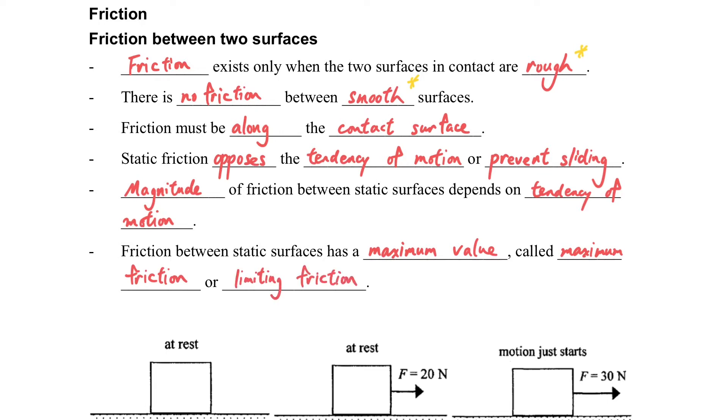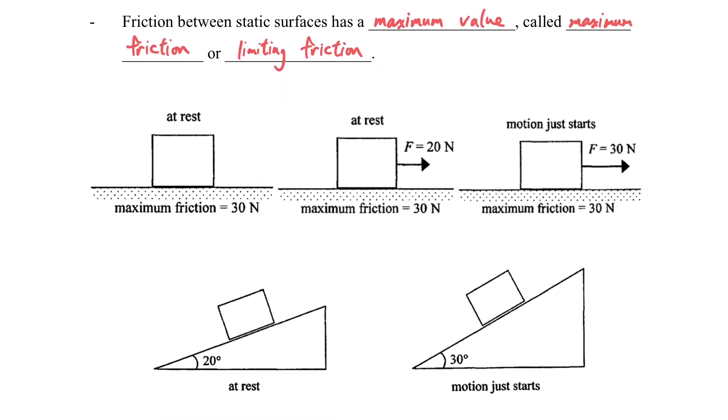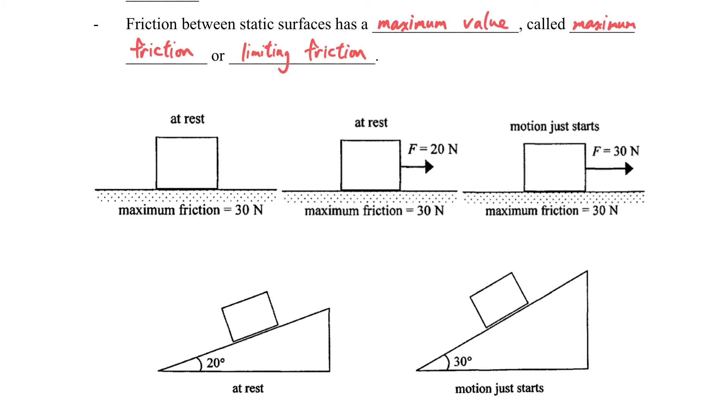So we will see a few examples to understand this idea. In the figure you can see the left one is at rest, and the maximum friction is 30N. But because it is not moving, the friction is equal to zero.